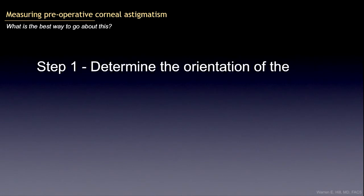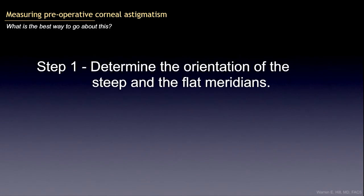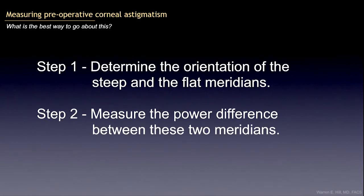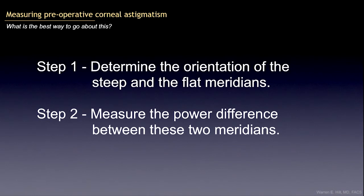What is the best way to go about doing the measurements for the toric IOL? First, you have to think like the calculator thinks. The calculator is looking for the orientation of the steep and flat meridians, and also the power difference between the two meridians. The calculator doesn't care if you put in Ks of 42 and 44 or 44 and 46 — it just sees a two diopter difference.